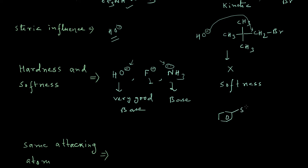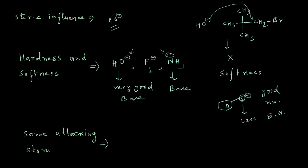Let us consider this example: thiophenoxide. We know that thiophenoxide is a very good nucleophile. Sulfur is a much less electronegative element, so if the electronegativity decreases, softness arises. Due to less electronegativity, the sulfur atom will hold its lone pair or negative charge very loosely — not tightly — so it can share its electron pair very easily to form a bond or undergo a bonding interaction from a distance, like in the transition state for an SN2 reaction.